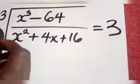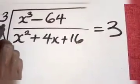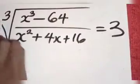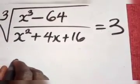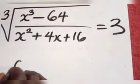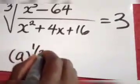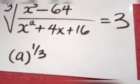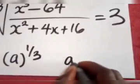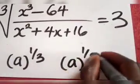Don't forget that whenever you have cube roots in a question, the cube root is the same thing as the number raised to the power of 1 over 3. If you have a square root, it means the number raised to the power of half.